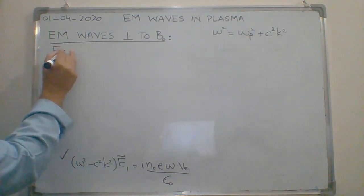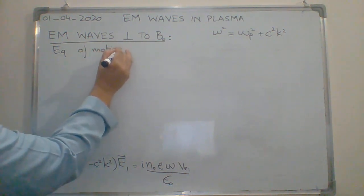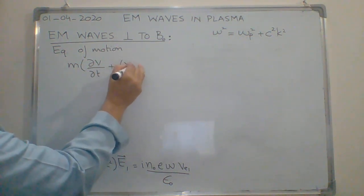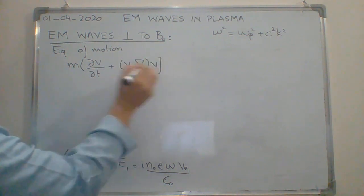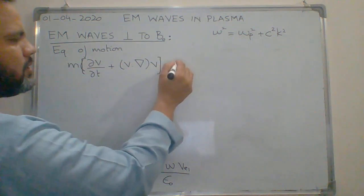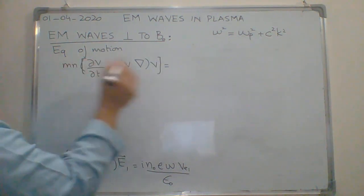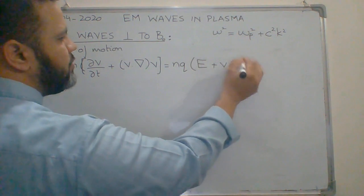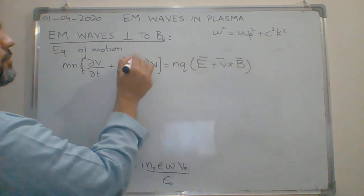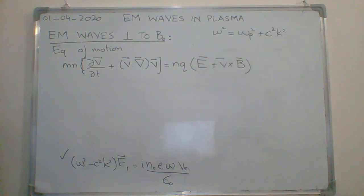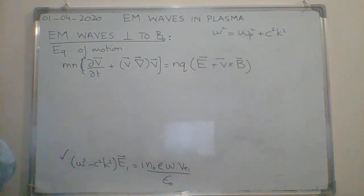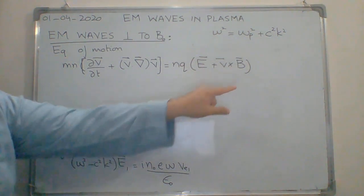The equation of motion is M times partial V by partial t plus V dot del V equals q times E plus V cross B. When we solve this equation of motion for electrons and linearize it, the convective term vanishes, and including the B0 term the linearized form becomes M partial V1 by partial t equals minus e times E1 plus V1 cross B0.